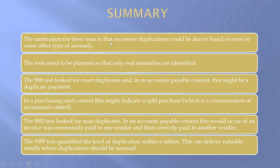We're homing in on little groups of odd transactions, and we're calling these transactions odd because of duplication. The tests need to be planned because we don't want too many false positives. We look at exact duplicates, near duplicates, and a formula that quantifies the level of duplication. I enjoyed writing this chapter and updating it, and I hope you get some good results when you run your tests. From me to you, bye-bye.